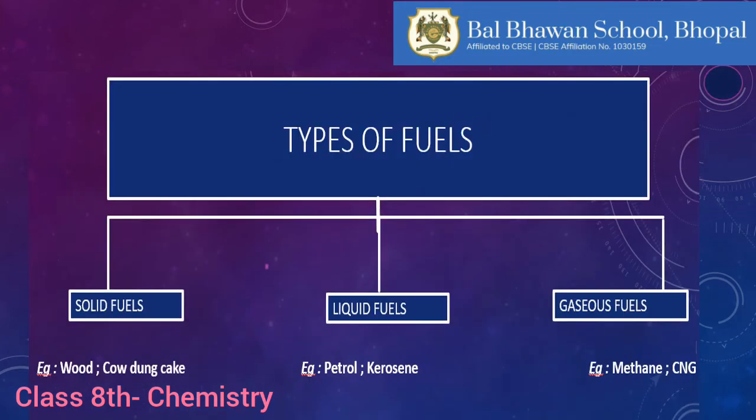These fuels can be broadly classified into three groups depending upon their state: solid fuels, liquid fuels, and gaseous fuels. Examples of solid fuels include coal, cow dung cakes, and charcoal.